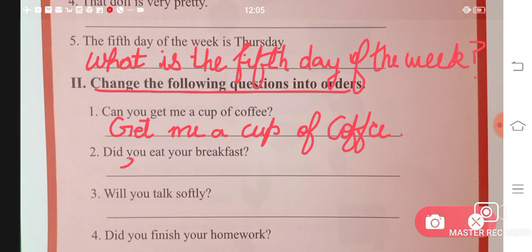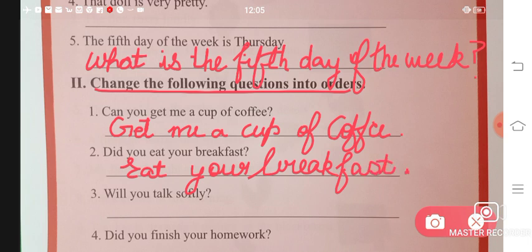'Did you eat your breakfast?' Remove 'did you' - 'Eat your breakfast.' 'Will you talk softly?' Remove 'will you' - put 'Talk softly.' And here also put a full stop instead of question mark.